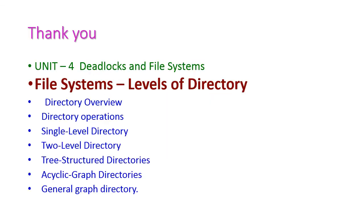Up to this point we have seen the levels of directory: the directory overview, directory operations, single level directory, two level directory, tree structure directory, acyclic graph directory, and general graph directory. We also discussed the drawbacks of all these directory levels. In the next class we will see another important topic from the fourth unit. Thank you.